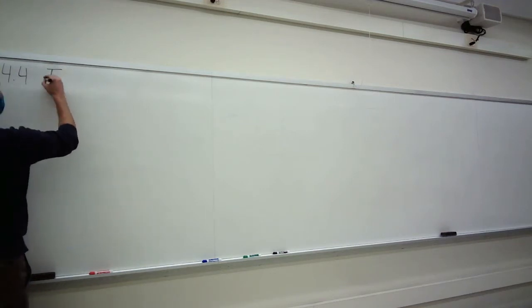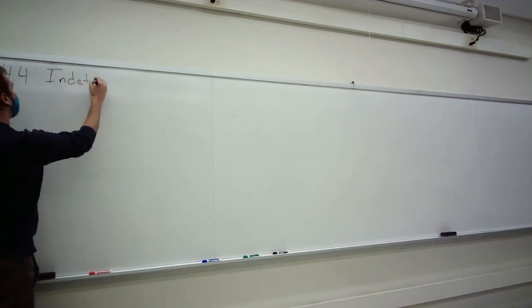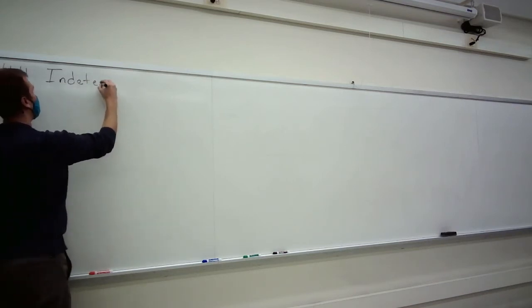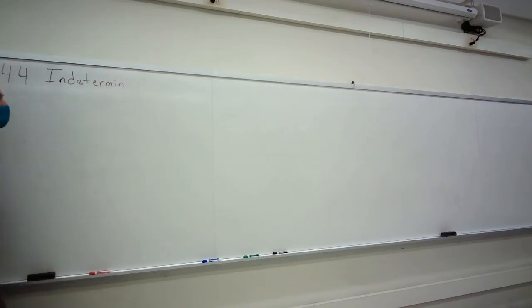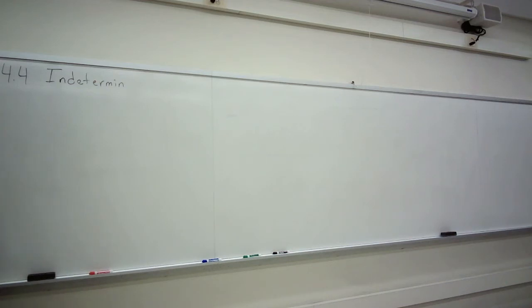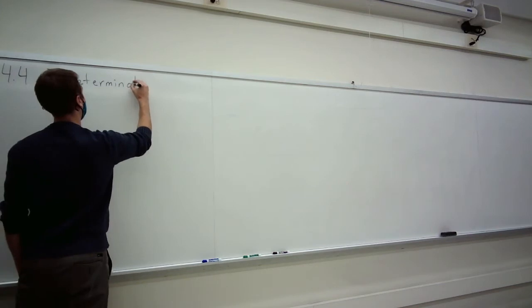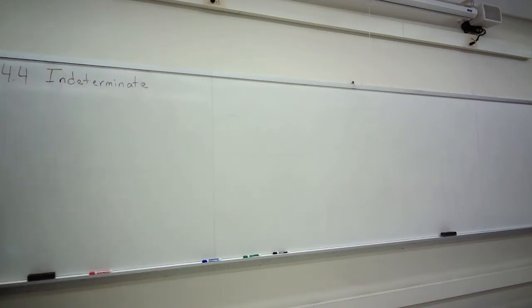Section 4.4 is on indeterminate forms. If you say you cannot determine something, then that thing is indeterminate. To determine means to put your finger on it, to tell exactly what it is. This is going to be about things where you cannot tell exactly what they are.